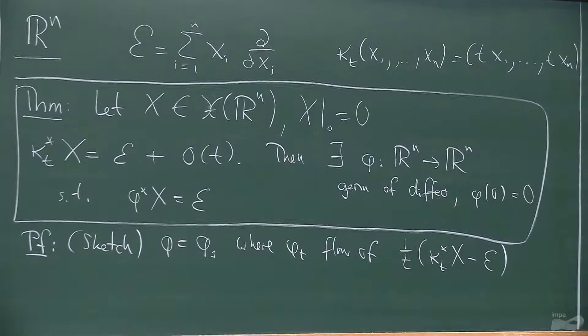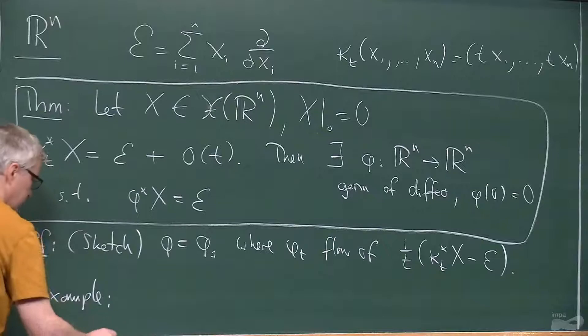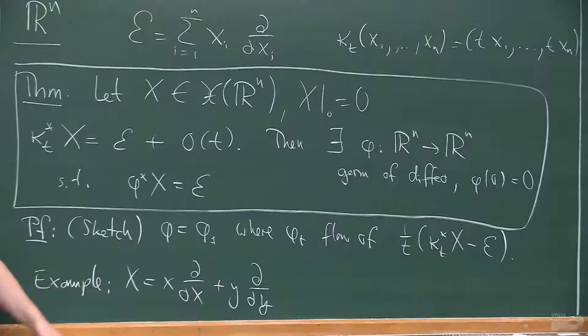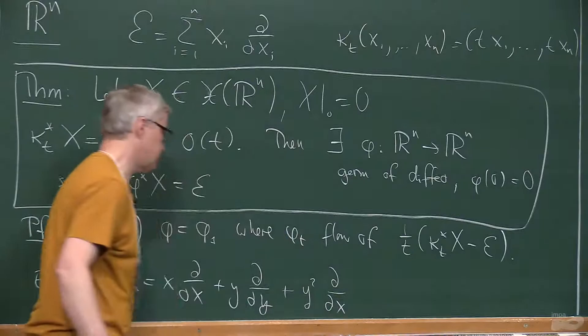One example of this situation is the vector field X equals x(∂/∂x) plus y(∂/∂y) — this would be the Euler vector field in R^2 — and then you have some perturbation y²(∂/∂x). I'm saying you can make a change of coordinates so that this higher-order term just disappears.